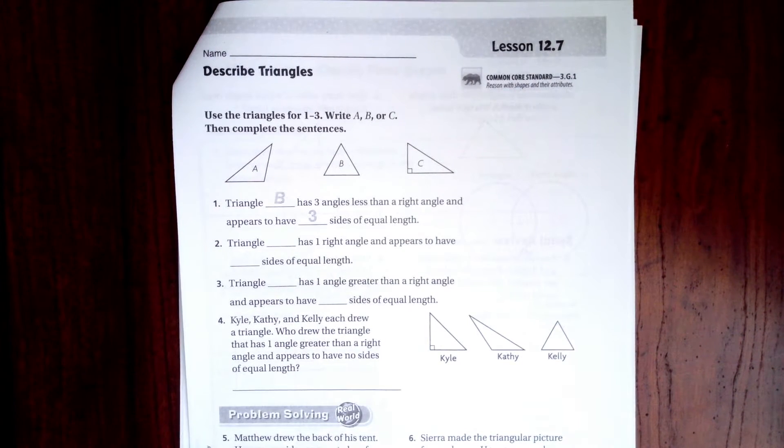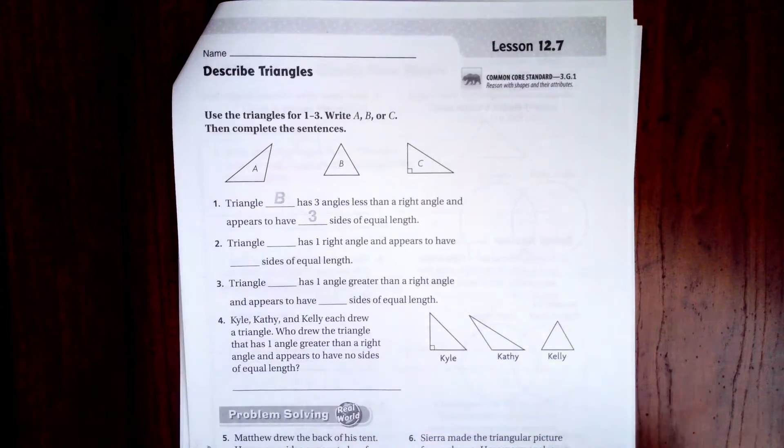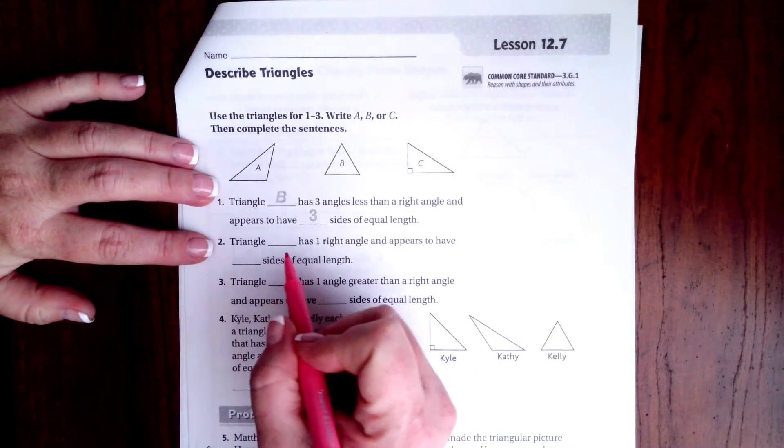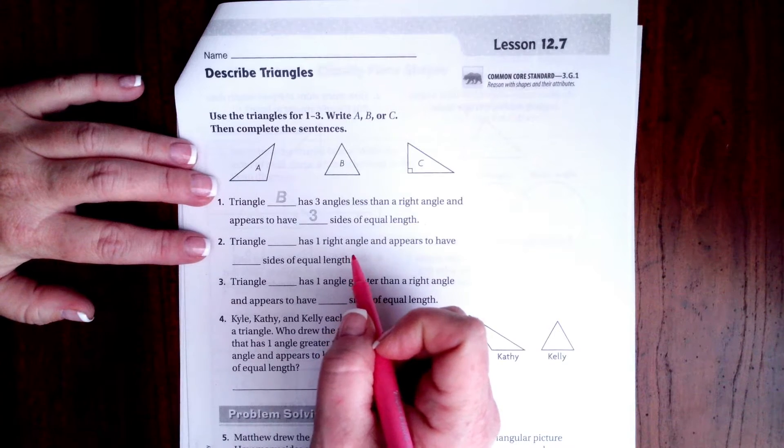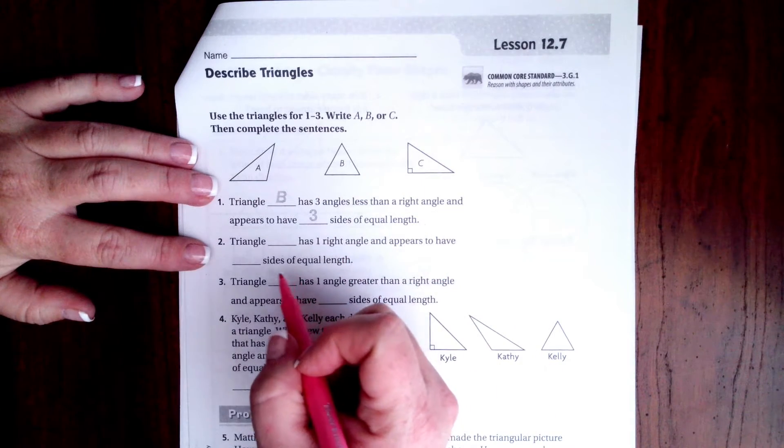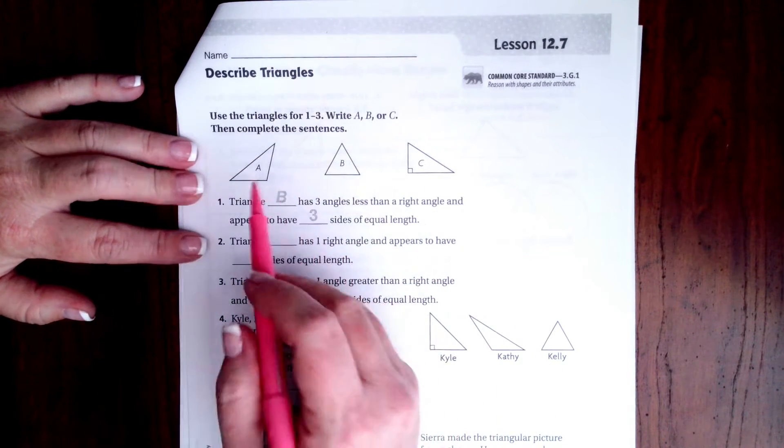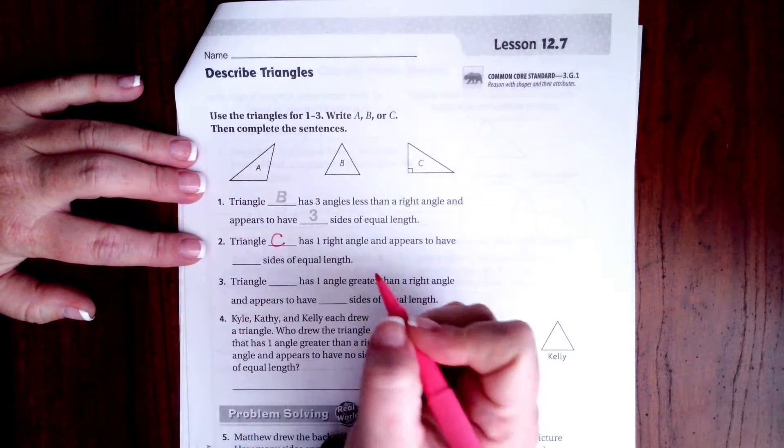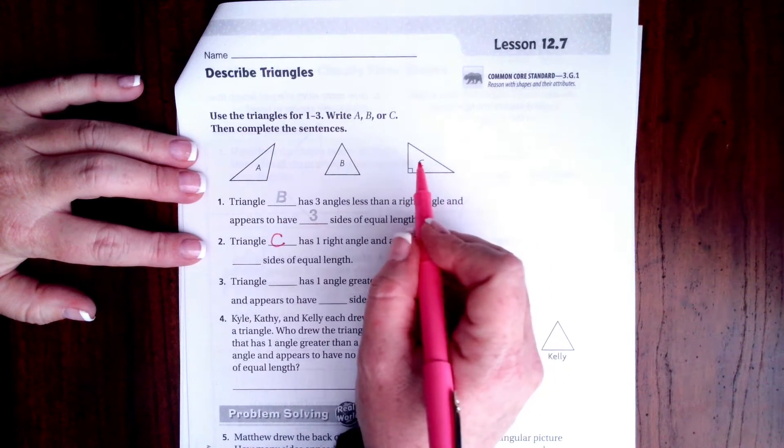Hi guys, welcome to third grade Chapter 12 Lesson 7. We're going to go ahead and dive right in. It says triangle blank has one right angle and appears to have blank sides of equal length. Well, the only one up here that has a little box in a corner is C, and how many sides of equal length does it have? Well, none of the sides are equal, so zero.